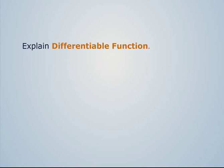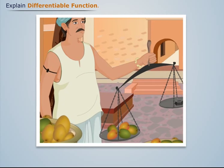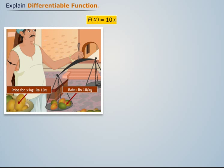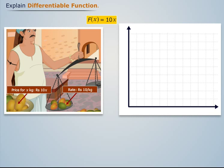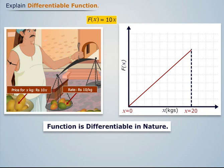Consider a person selling mangoes at 10 rupees per kg. Therefore the price of x kgs of mangoes will be 10x, giving us a function. Now let's plot this function on the graph and take the boundary from x equal to 0 to x equal to 20. We see that there is no sharp turn in the curve within this boundary, meaning the curve is smooth — thus we can say that this function is differentiable in nature.